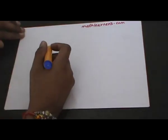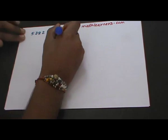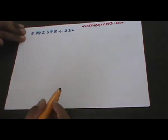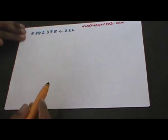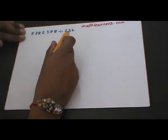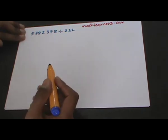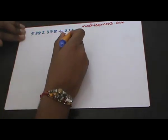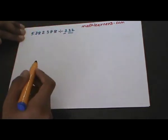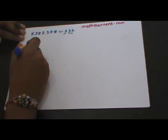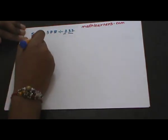Now suppose we want to divide 5782378 by 232. The divisor is a 3-digit number, so we need to split it into divisor and flag. We could take 23 as the new divisor and 2 as the flag, but then we'd need to know the table of 23. Instead, we consider 2 as our divisor and 32 as our flag. Let's solve this with divisor 2 and flag 32.